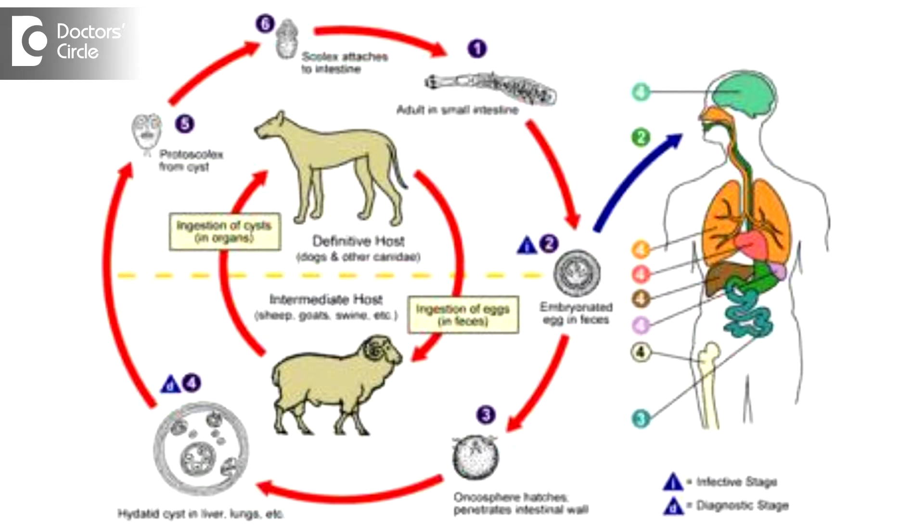Tapeworm infestation is always caused by unhygienic hands. Usually it is asymptomatic. A few people will have symptoms like diarrhea, abdominal discomfort, and pain abdomen. A simple treatment would be taking anti-deworming drugs, that's anti-helminthic drugs.